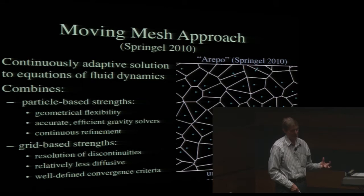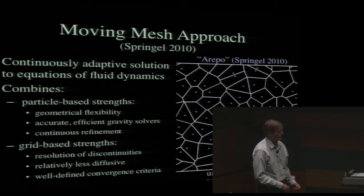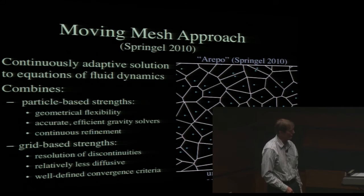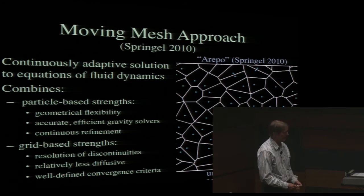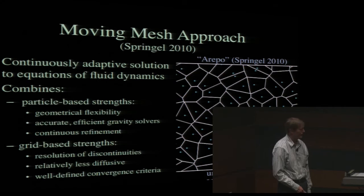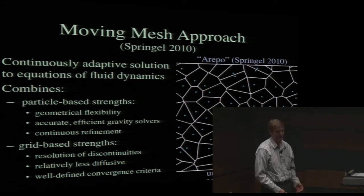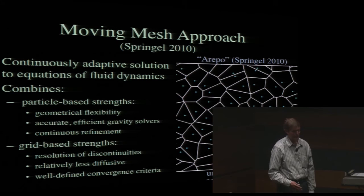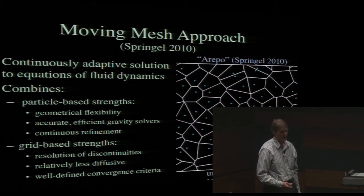This approach has been used a lot in engineering applications, but not so much in astrophysics. Compared to traditional codes used in cosmology, it offers a lot of advantages. In particular, it doesn't have any geometrical constraints, it allows continuous spatial adaptivity as the system evolves, and each cell can have its own time step—so it's adaptive in time as well. It provides continuous refinement as the system evolves and can achieve very large density contrasts. It also combines advantages of well-known grid-code methods, including techniques for resolving discontinuities like shock waves accurately, and integrating equations with relatively less diffusion.